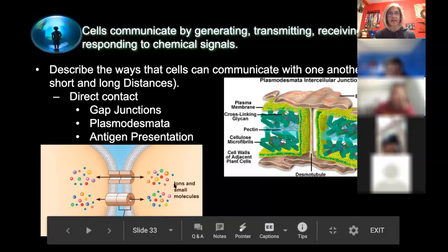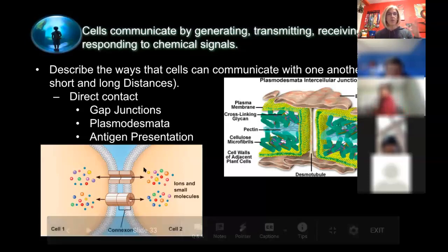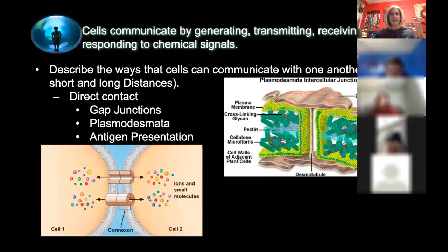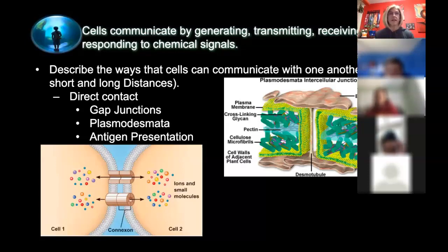Gap junctions are common in heart muscle. When one cell gets a signal, every single cell doesn't have to receive that signal individually to beat — the signal is sent through that tube to all of the cells so they all beat in synchrony.